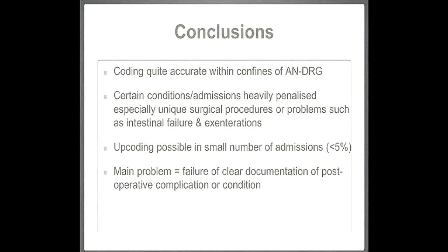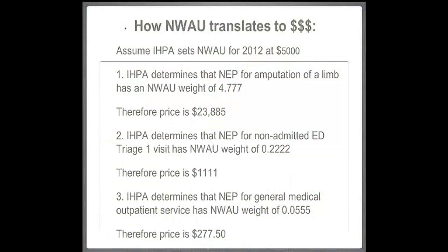Going back to the national efficient price and NOISE — the advantage is that you can use it to compare different types of hospital presentations or admissions. This is a calculation I took from the AMA. The Independent Hospital Pricing Authority says the national equivalent price for amputating a limb has a weight of 4.77, and with the NOISE set at a certain amount, that's theoretically how much we'd be funded by state and federal sources. For an emergency department non-admitted triage category one, the weight is set and we'd get paid that much. A general medical outpatient service has its own figure — that's how much money the institution gets. These are examples of how this actually turns into money.